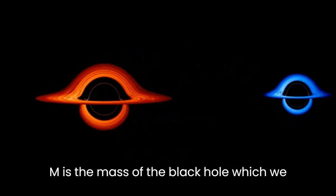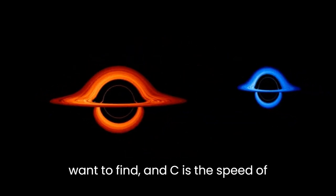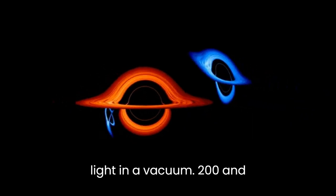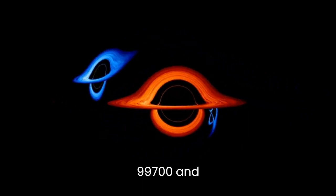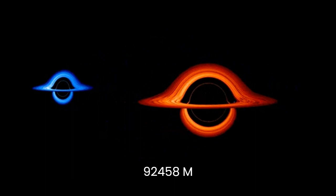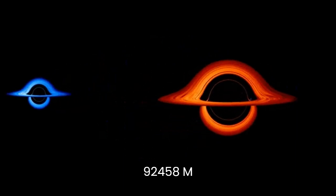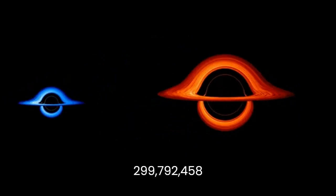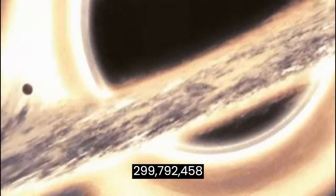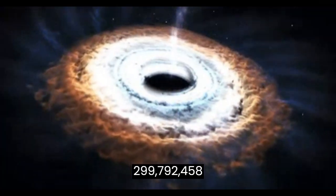M is the mass of the black hole, which we want to find, and c is the speed of light in a vacuum, 299,792,458 m/s.